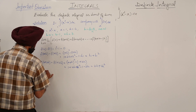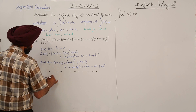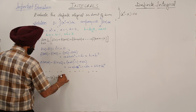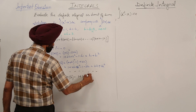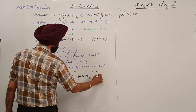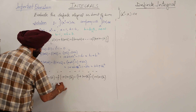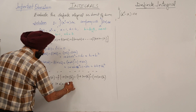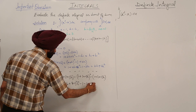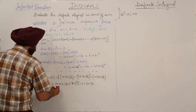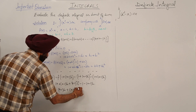Going for the final term, f(a+(n-1)h): f(1+(n-1)h) = (1+(n-1)h)² - (1+(n-1)h) = 1 + 2(n-1)h + (n-1)²h² - 1 - (n-1)h. This simplifies to (n-1)h + (n-1)²h².